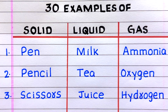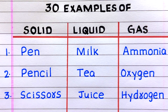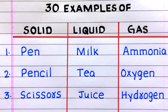First example of a solid is pen. First example of a liquid is milk. Second, tea. First example of a gas is ammonia. Second, oxygen. Third, hydrogen.